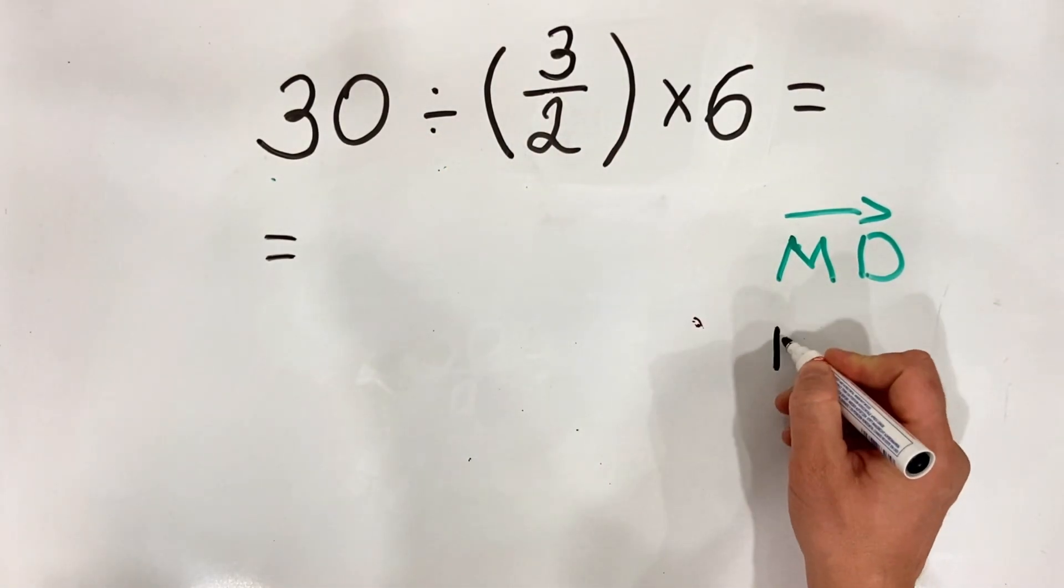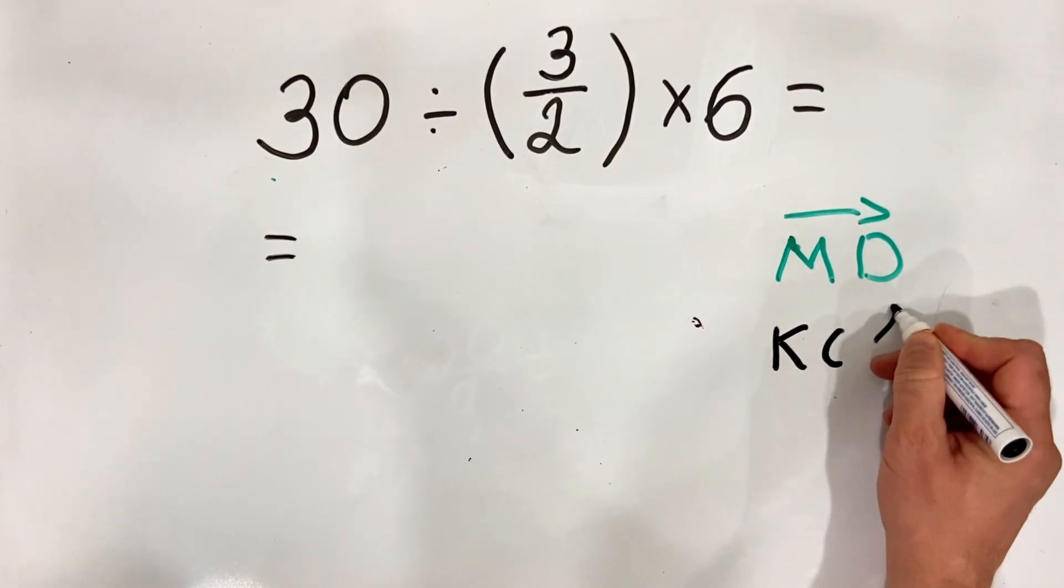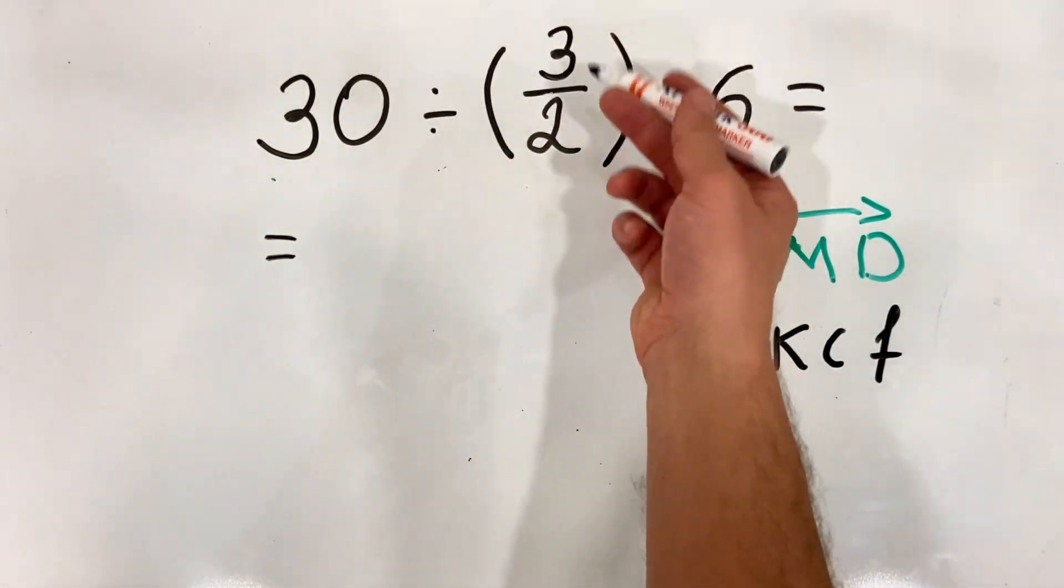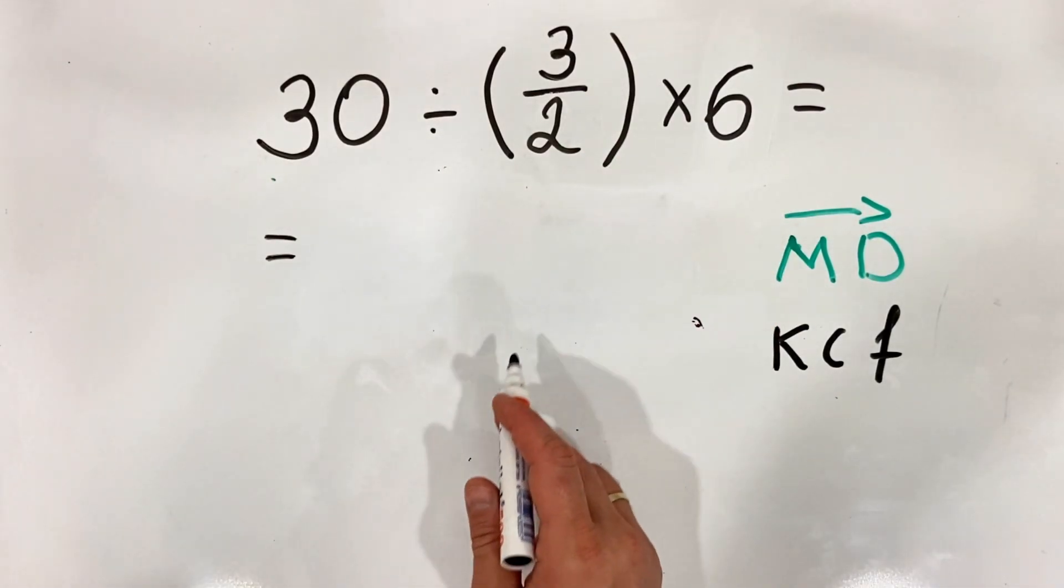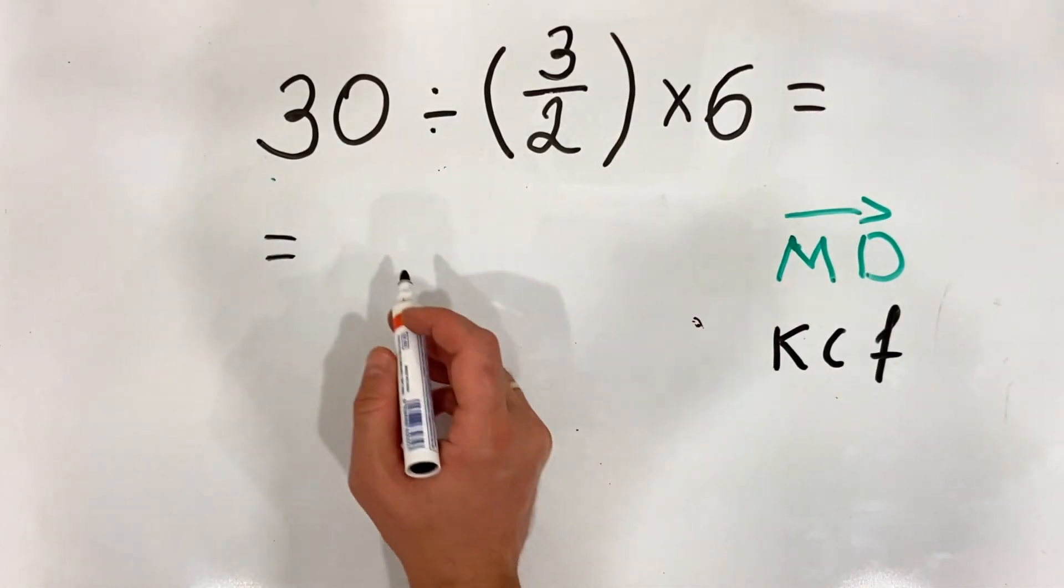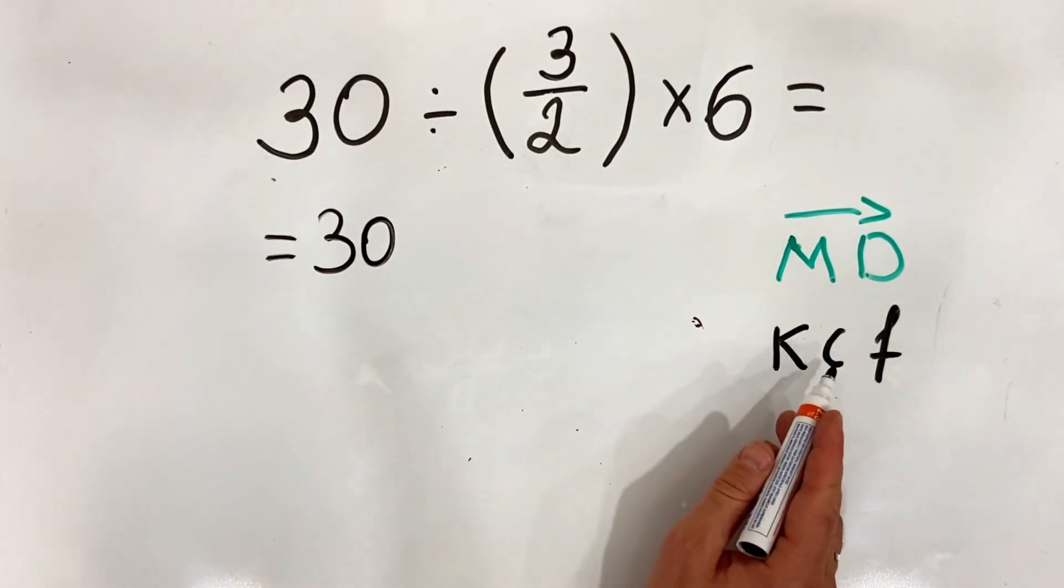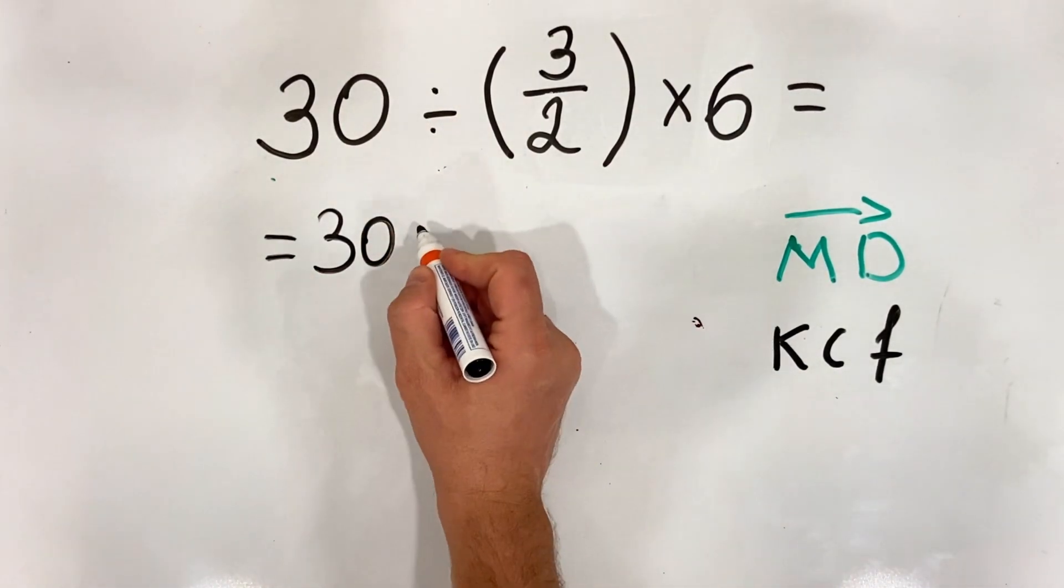For this, please don't forget the KCF rule. When we divide by a fraction, we multiply by its reciprocal. K stands for keep, so we keep the first number. C stands for change the sign; we change it to multiplication.